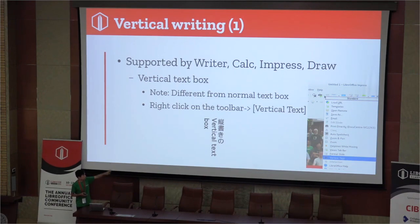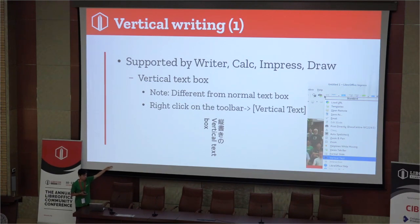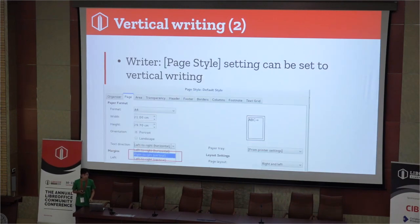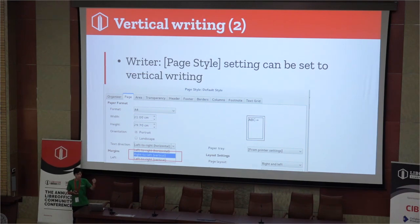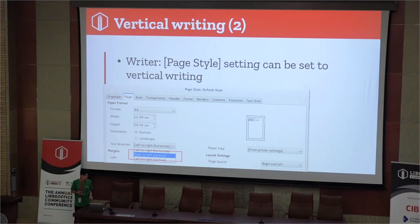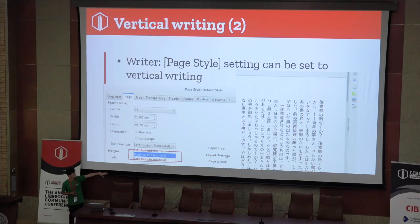In this sample, Japanese text is shown vertically. English text is different — it only rotates, not true vertical writing. The second method for vertical writing in Writer is a full-page setting: you can use the page setting with right-to-left, top-to-bottom reading direction.